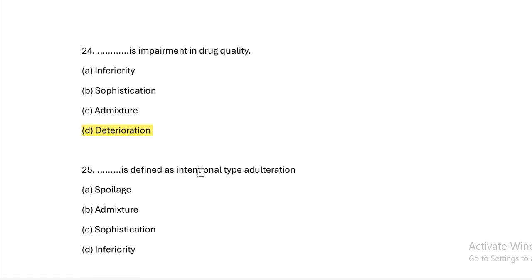This is defined as an intentional type of adulteration. Option A: spoilage. Option B: admixture. Option C: sophistication. Option D: inferiority. Answer — Option C, sophistication, as it refers to intentional adulteration.